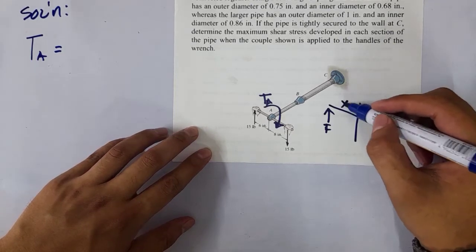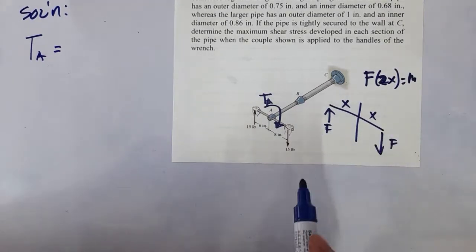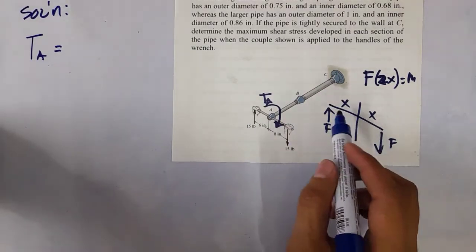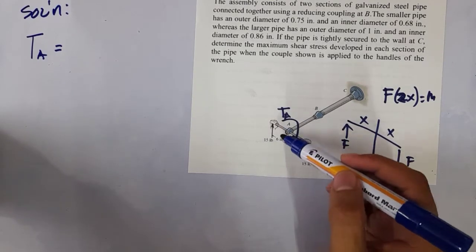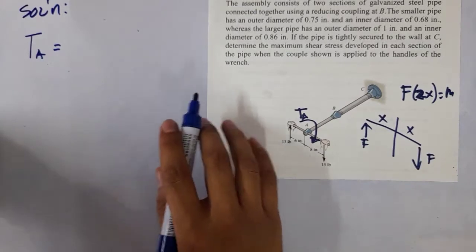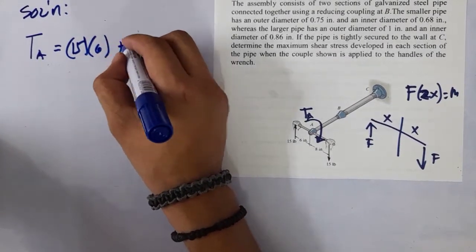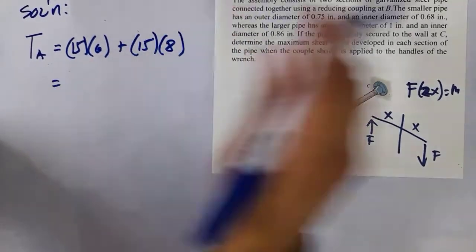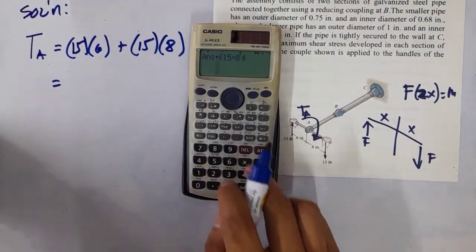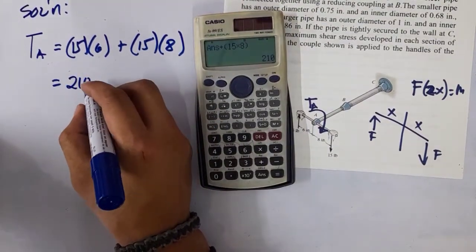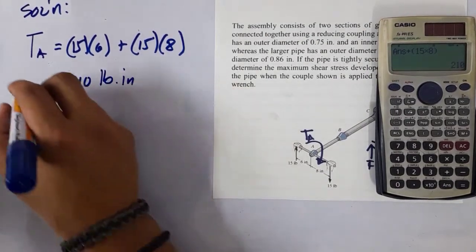We have: 15 pounds times 6 inches plus 15 pounds times 8 inches equals 210 pound-inches. The unit is pounds times inches. So the torque at A is 210 lb·in.